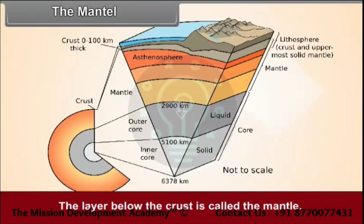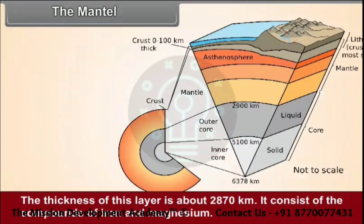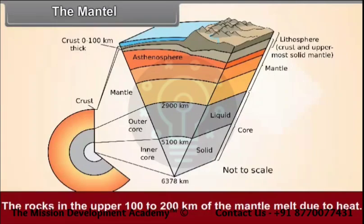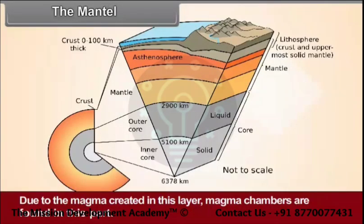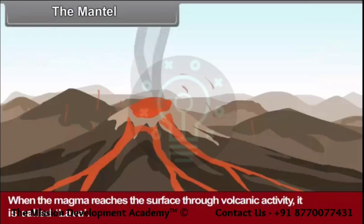The mantle. The layer below the crust is called the mantle. The thickness of this layer is about 2,870 kilometers. It consists of the compounds of iron and magnesium. The rocks in the upper 100 to 200 kilometers of the mantle melt due to heat. Due to the magma created in this layer, magma chambers are formed in this part. When the magma reaches the surface through volcanic activity, it is called lava.